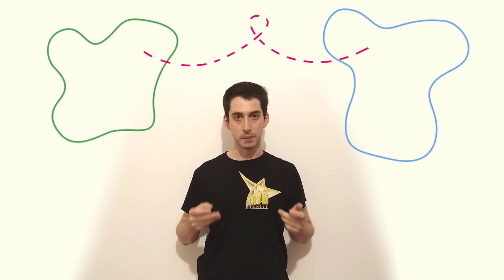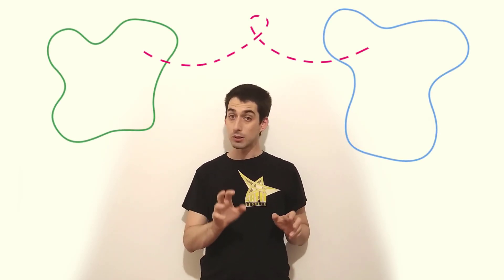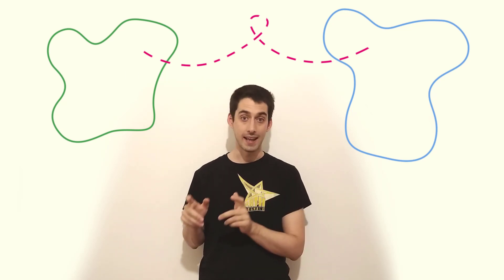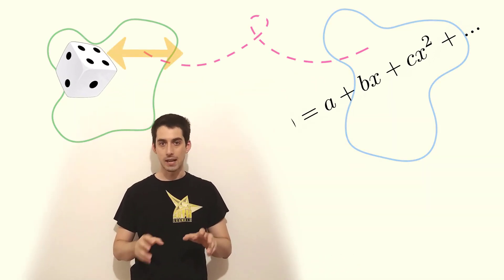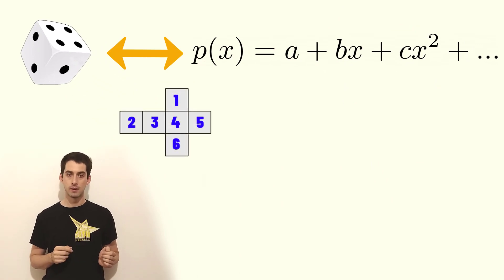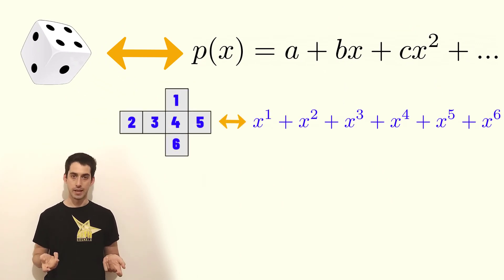The secret is a link between two apparently different topics of mathematics. Did you know that it's possible to associate a die with a polynomial? Let's do an example with our normal die. This is the polynomial associated with it.